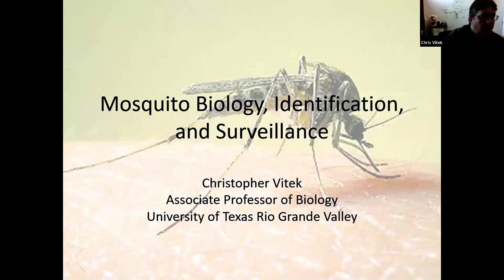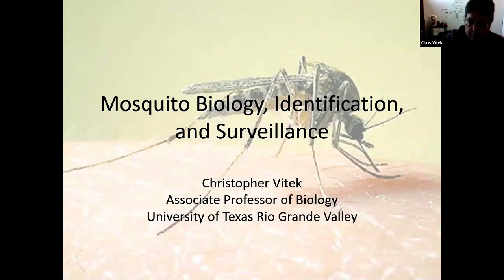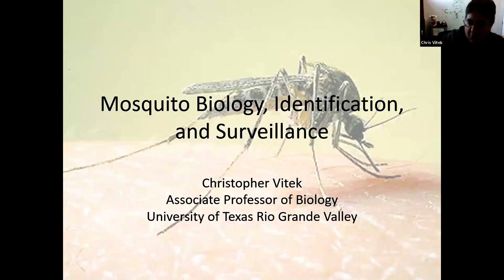Today I'm going to talk about some of the work that we're doing that's being funded by the Centers for Disease Control and the Texas Department of State Health Services — specifically some surveillance activity work in the lower Rio Grande Valley region of Texas. I'll start by giving a brief overview about mosquitoes, how we recognize them, how they transmit diseases, before I start talking about the surveillance efforts.